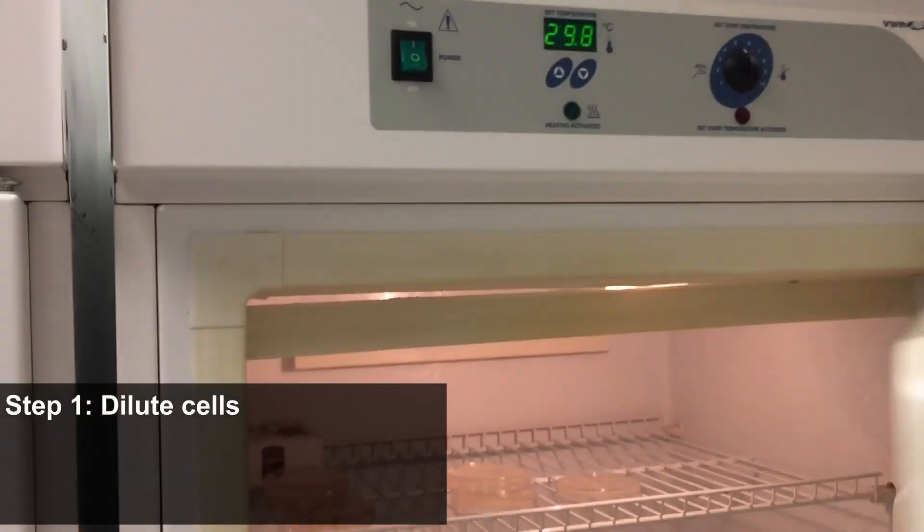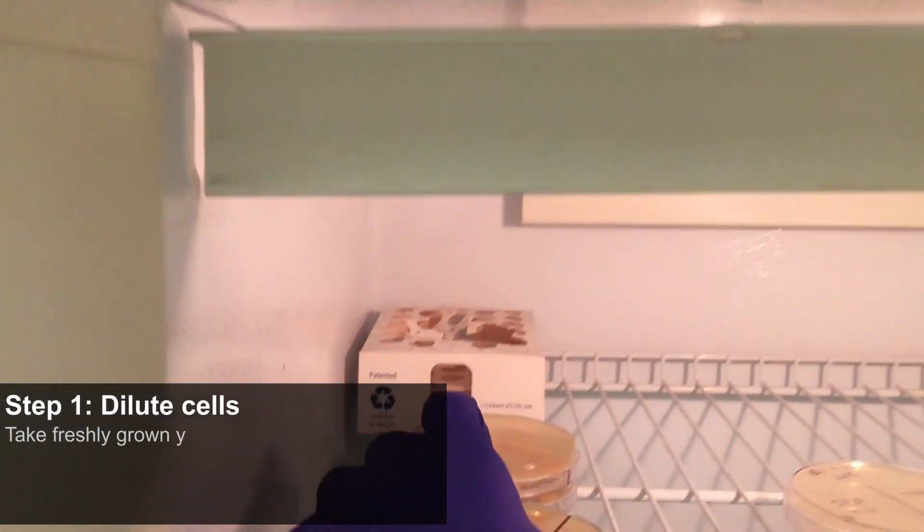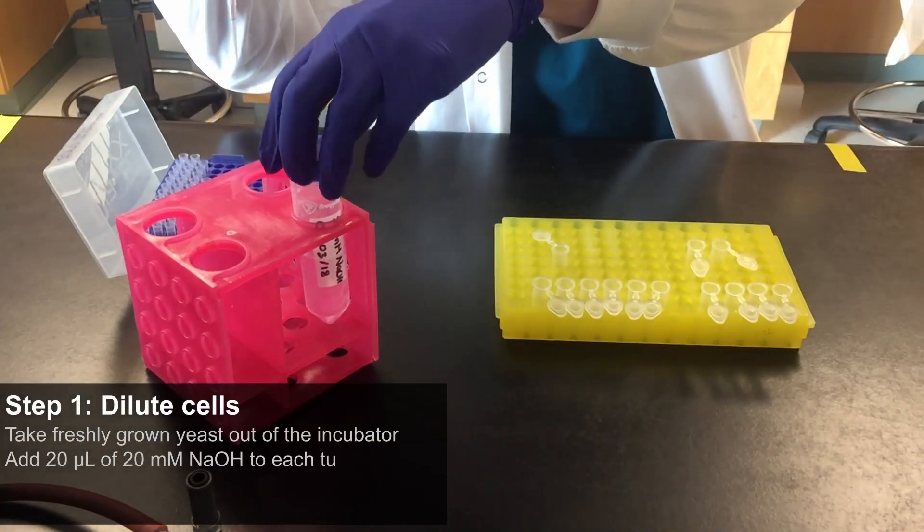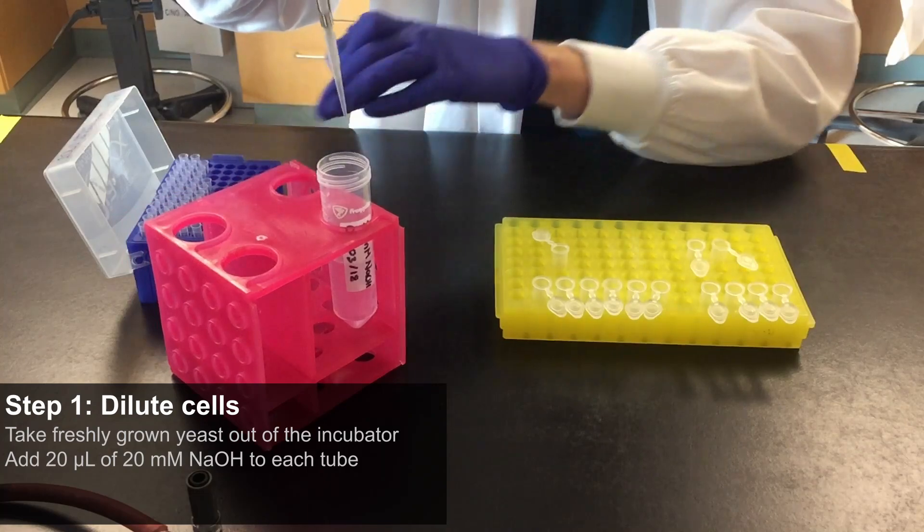Step 1: Dilute cells. Take freshly grown yeast out of the incubator. Add 20 microliters of 20 millimolar sodium hydroxide to each tube.